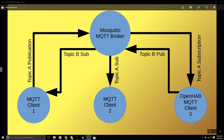That's the basic idea — you can publish and many people can receive a subscription. Something to be aware of is that the broker doesn't have a concept of who published a message. Many people can publish to a specific topic, so MQTT client one doesn't necessarily own topic A. All of the clients could publish to that topic and all the subscribers would get the update. It's not an ownership model — it's a topic and message model. It's up to you to make sure that clients publishing to given topics makes sense and there's not a conflict over what the proper last message is for a topic, because it's an event-driven model.